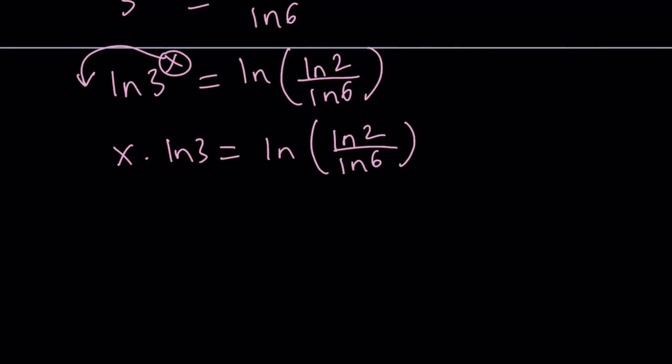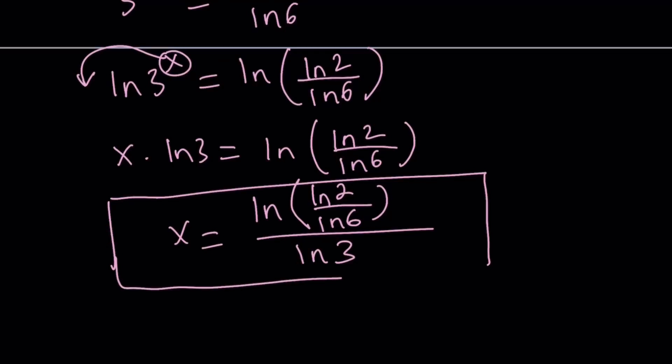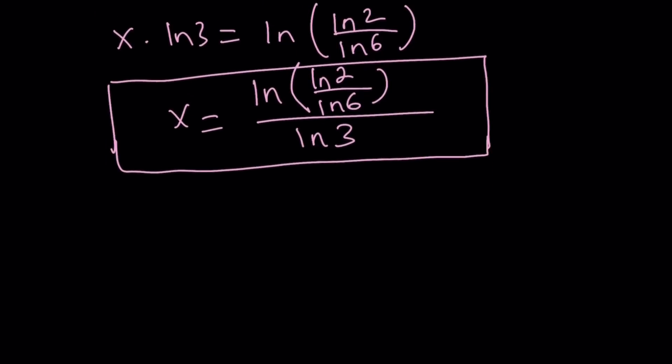Now, we want to find the critical value, the x coordinate. So let's go ahead and divide both sides by ln 3. And there you go. Now, this is our x value where the function has a horizontal tangent. Does it? Yes. When I show you the graph, you'll have a better idea. But for right now, let's go ahead and take a look at this value. Is this a positive value? Is this a negative value? What do you think?